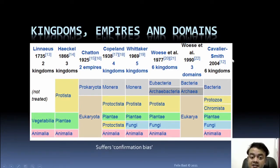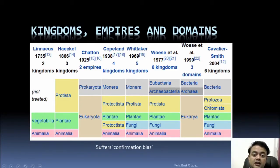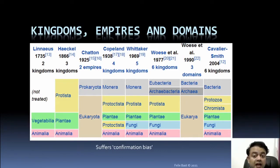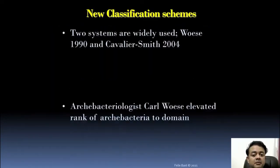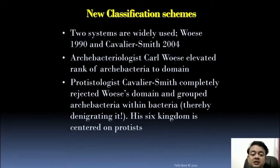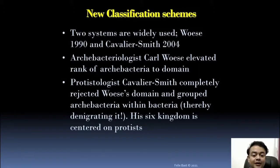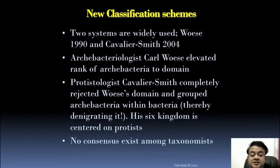Cavalier-Smith also suffers from confirmation bias. He is an Oxford protozoologist, so he elevated Protista into two major kingdoms: Chromista and Protozoa. As a protozoologist, he completely rejected Woese's domain system and grouped Archaebacteria within Bacteria. His sixth-kingdom classification is essentially centered on the protists.